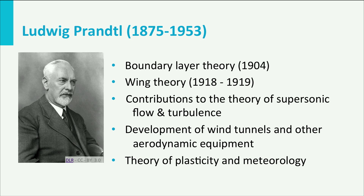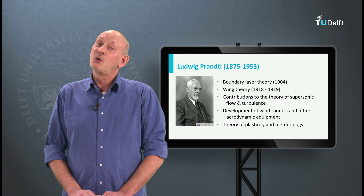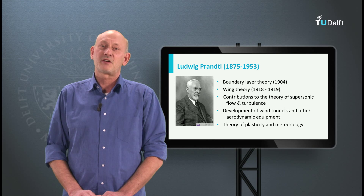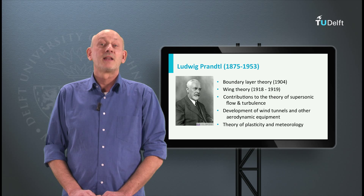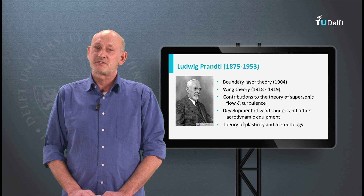Until the end of the Second World War, this institute was very famous and the world leader in the field of aerodynamics. Göttingen University had a variety of wind tunnels, enabling Prandtl and his students to conduct many experiments on transition, separation, wing aerodynamics, compressibility effects, and supersonic flow. Prandtl had many students who later became renowned researchers in their own right in various fields of aerodynamics, like Heinrich Blasius, Hermann Schlichting, Theodor von Kármán, Jacob Eckert, and others.